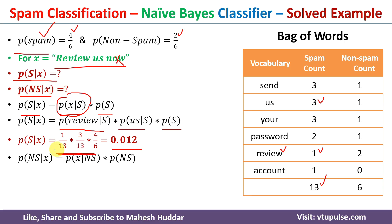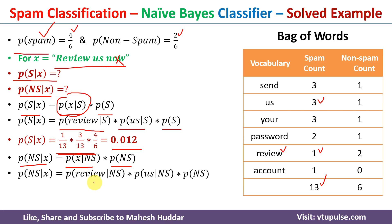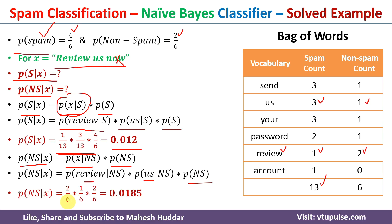Now we calculate probability of non-spam given x, which equals probability of x given non-spam multiplied by probability of non-spam. Expanding: probability of 'review' given non-spam × probability of 'us' given non-spam × probability of non-spam. 'Review' appears 2 times out of 6 non-spam words, and 'us' appears 1 time out of 6. Probability of non-spam = 2/6. Solving gives 0.0185. Since P(non-spam|x) > P(spam|x), the first new example is classified as non-spam.